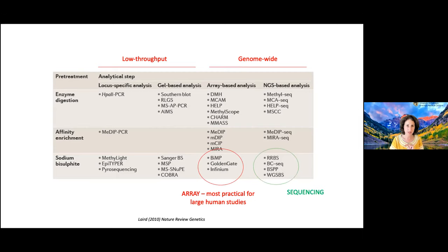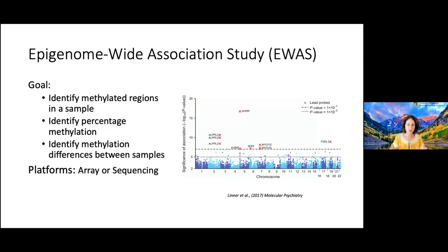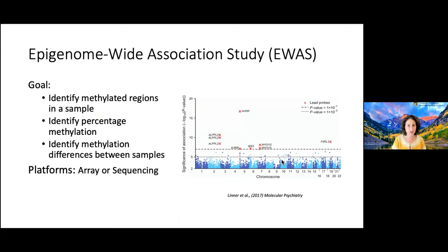Both arrays and sequencing provide genome-wide analysis, referred to as an epigenome-wide association study — EWAS, like GWAS for genetics. The idea is a comprehensive look in the genome, identifying methylated regions, percentage methylation, and differences between samples. You can use these technologies to get similar figures to a GWAS — Manhattan plots where chromosome is on the x-axis, some association with an exposure or disease on the y-axis, and genome-wide cutoff lines for top candidates.